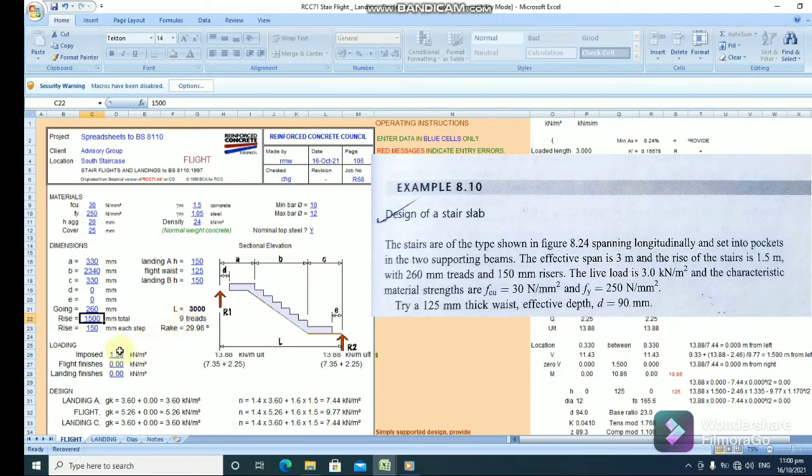So, now, let's input the live load of 3 kilonewtons per meter squared. So, just change that to 3 under imposed loading. And, there we are. So, notice how the values are changing.